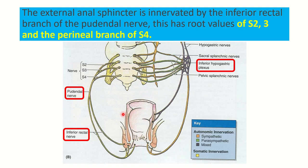Here in this picture we can see the external anal sphincter and inside it the internal anal sphincter. The external anal sphincter is supplied by the inferior rectal nerve, which is derived from the pudendal nerve. The pudendal nerve root is sacral 2, sacral 3, and sacral 4, so the external anal sphincter is supplied by sacral 2, sacral 3, and sacral 4.